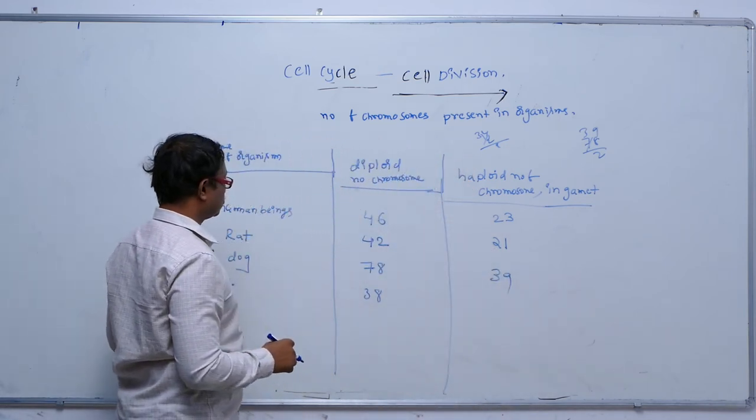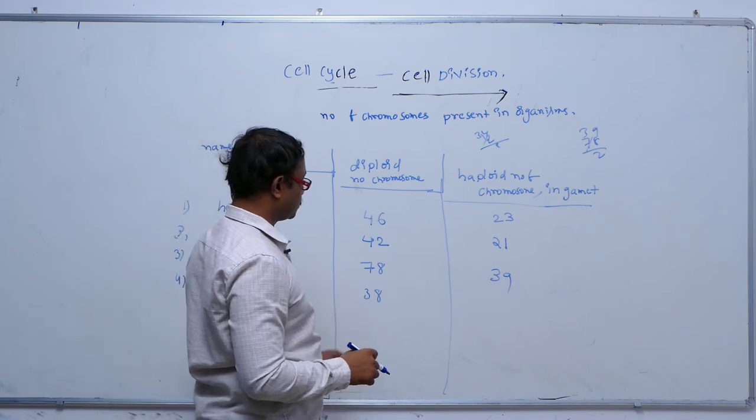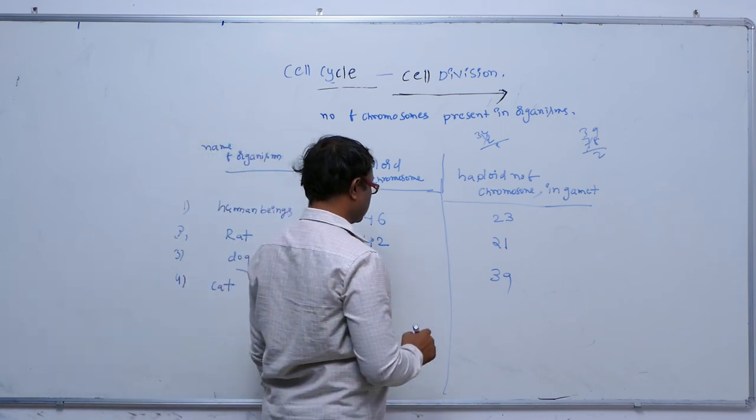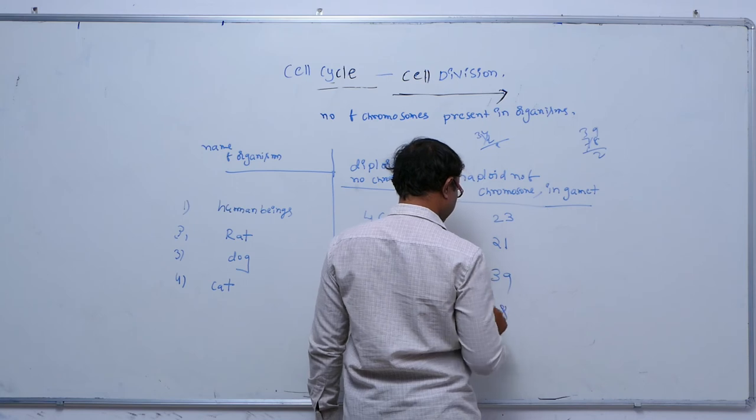After that, in cat, the diploid number of chromosomes is 38, and the haploid chromosome number is 18.